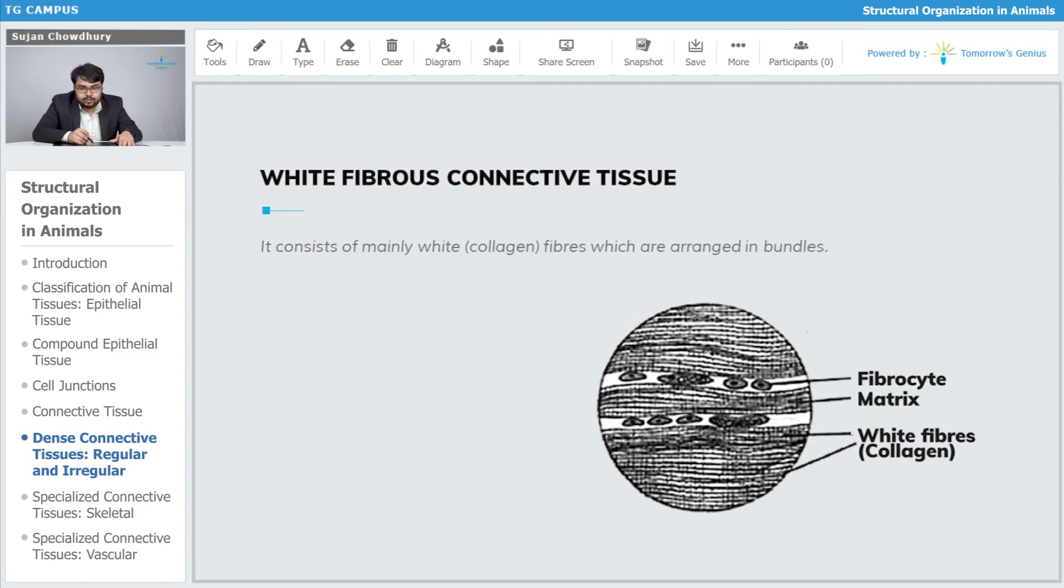The white fibrous connective tissue is characterized by a helpful diagram. It consists of mainly white collagen fibers which are arranged in bundles.